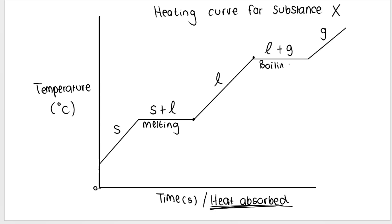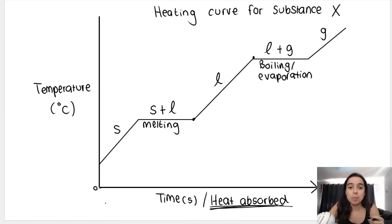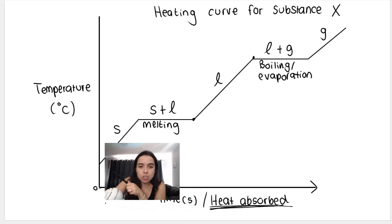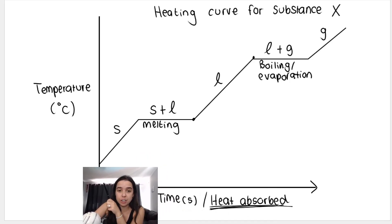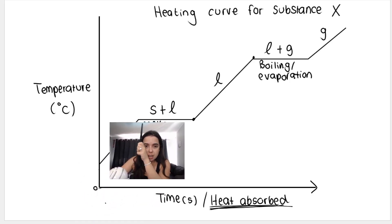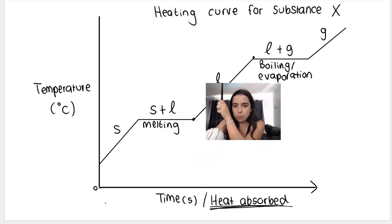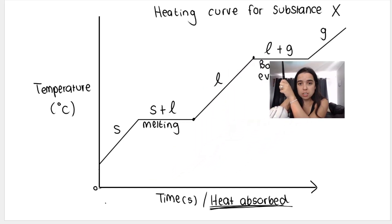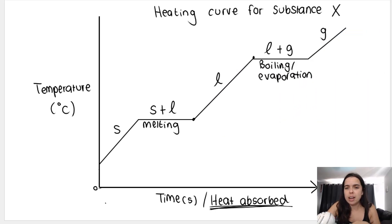A few important things to note: we are continuously adding heat energy. Time is going on and heat is being absorbed continuously by the substance. However, just because heat is being absorbed does not mean temperature is always increasing. Energy is always being taken up, but only at certain points in time is the temperature actually increasing — it increases in the solid phase, stays constant during melting, increases again in the liquid phase, stays constant during boiling, then increases again in the gaseous phase.